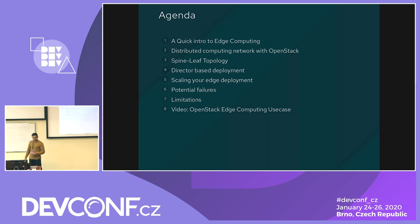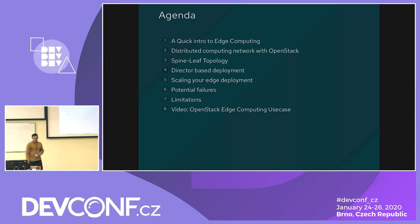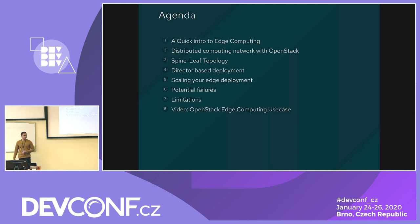Then we'll cover distributed computing network with OpenStack, then a spine-leaf topology — it's a network topology — then a director-based deployment method for deploying OpenStack, then how to scale your edge deployment, then potential failures and limitations, and at the end we have a very interesting demo for edge computing. So stay tuned.